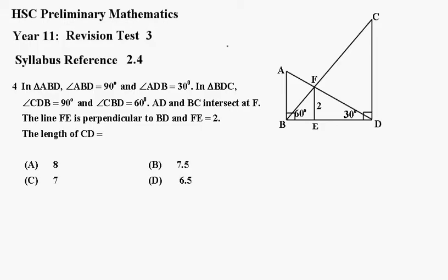Number 4. In the triangle ABD, angle ABD is 90 degrees. Angle ADB is 30 degrees.